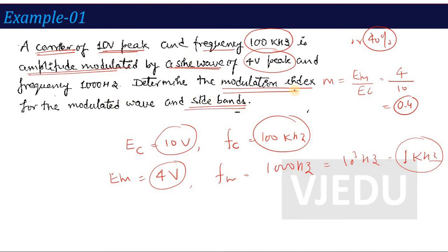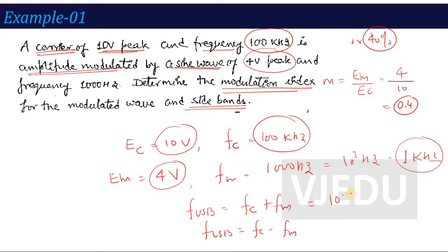The second part of the example asks for the sideband frequencies. Upper sideband = fc + fm = 100 kHz + 1 kHz = 101 kHz. Lower sideband = fc − fm = 100 kHz − 1 kHz = 99 kHz. These direct formulas are used whenever a question provides carrier and message signal frequencies.